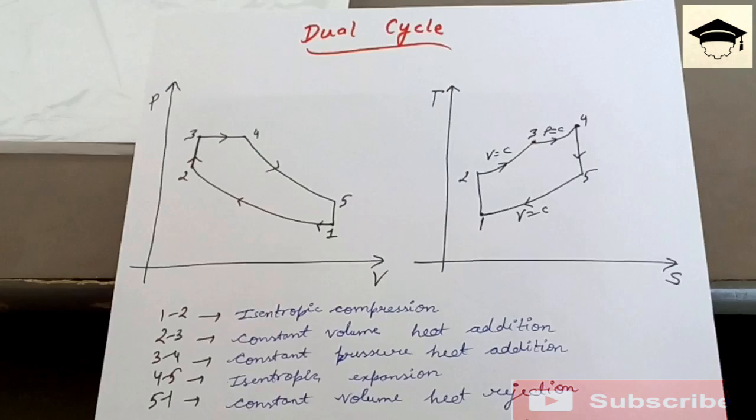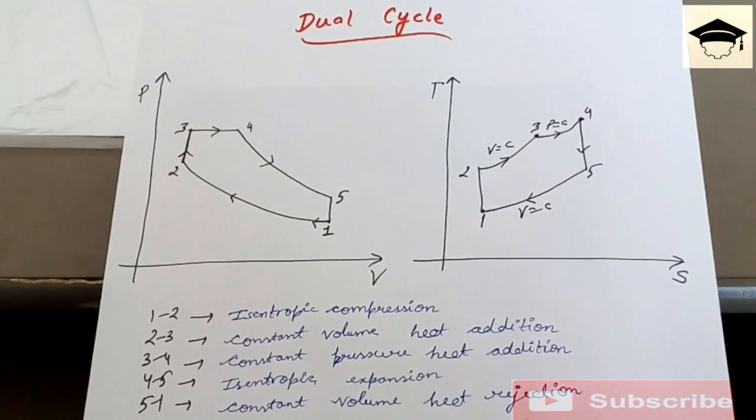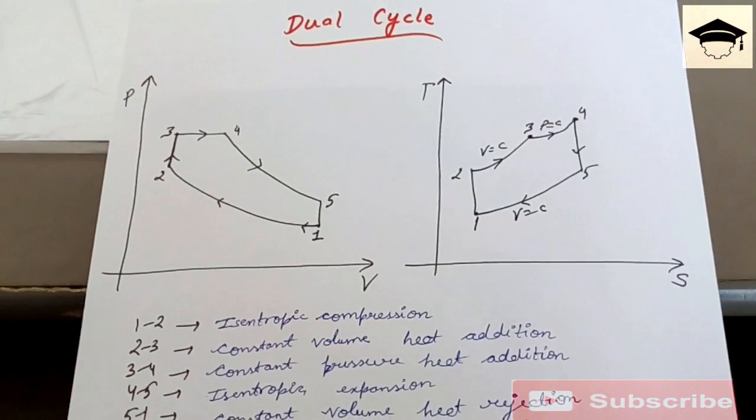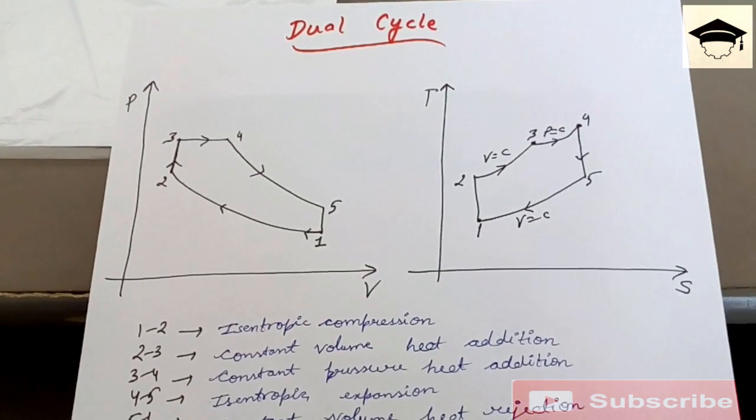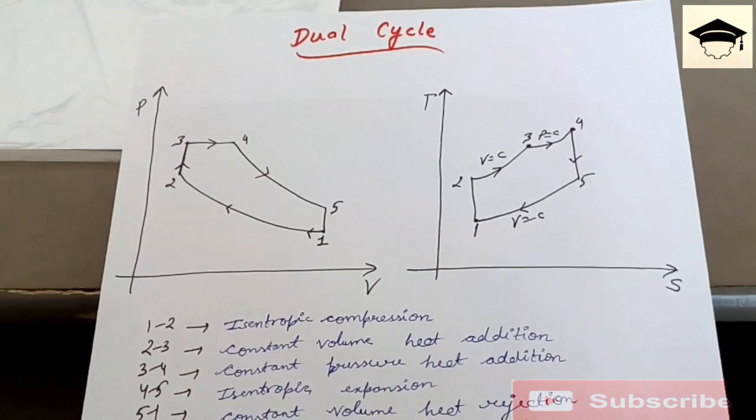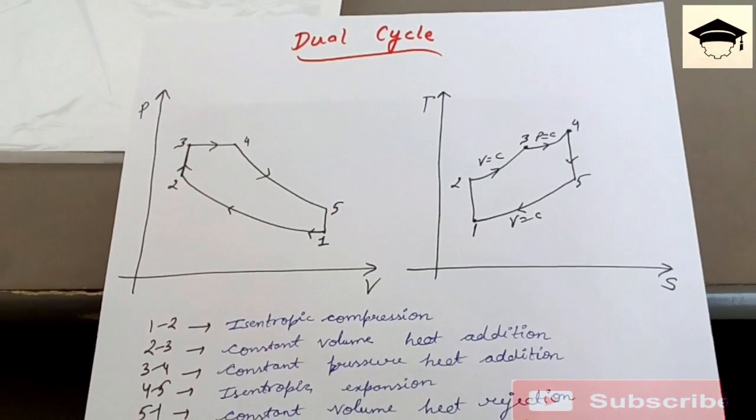Dual cycle is a combination of mainly Otto cycle and diesel cycle. It is a summation of Otto cycle and diesel cycle. The PV diagram or the pressure-volume diagram and the TS diagram or the temperature-entropy diagram are shown as in the figure.